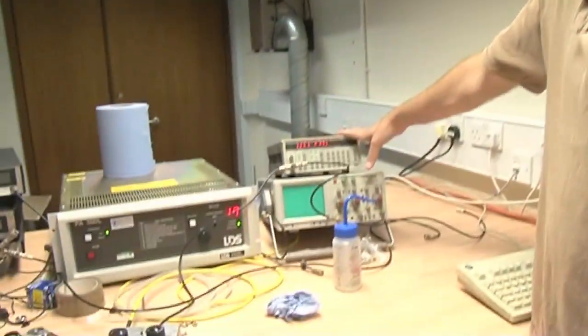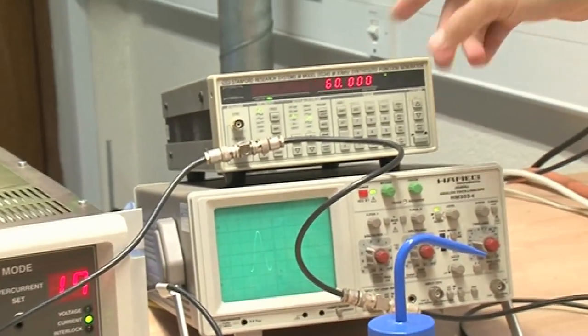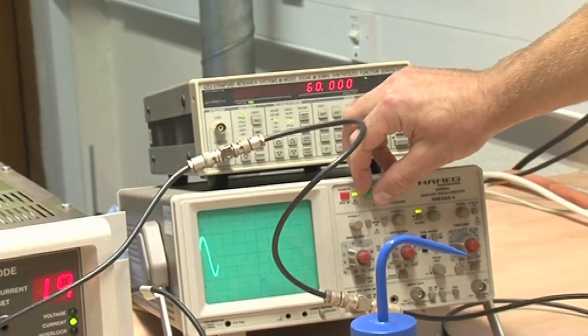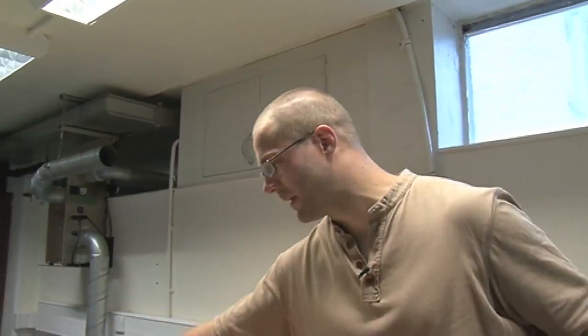This is just a little box which generates a signal. So it's generating a 60 hertz signal which you can't see. There we are, that's a 60 hertz signal. For those of you who remember your high school maths, what I want is a sine wave. Okay, so this is a sine wave signal and I'm going to put that through an amplifier.